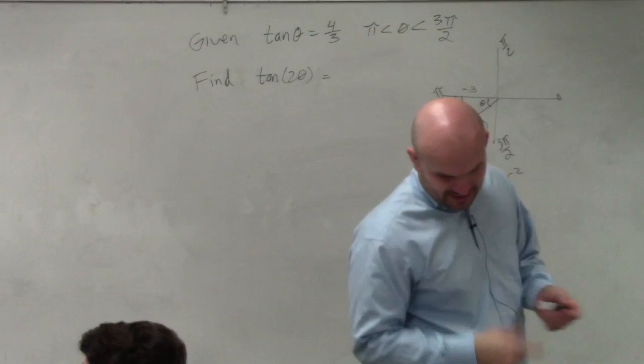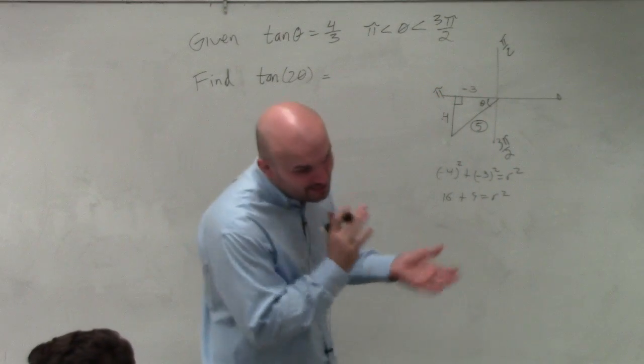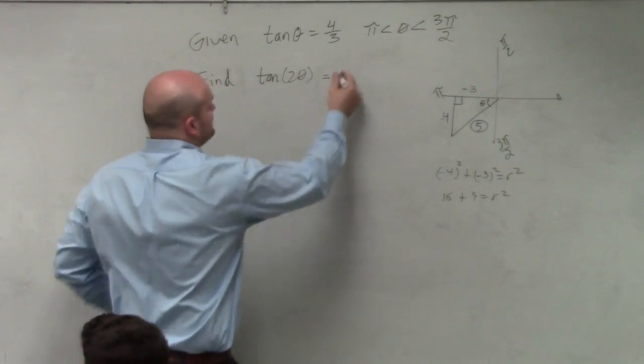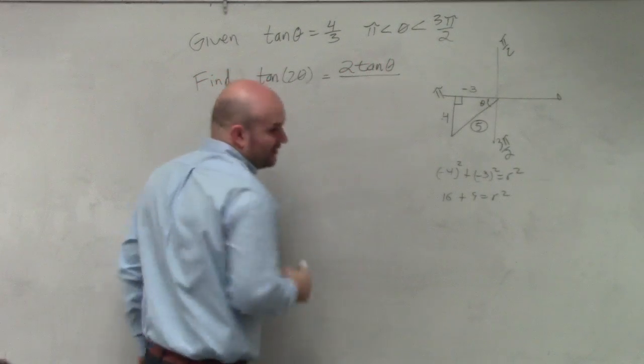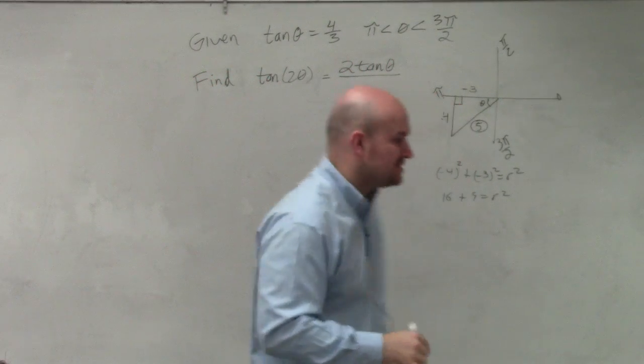If you look at this, you see there's the tangent of your double angle. You can see we have this formula: 2 tangent of theta all over 1 minus tangent squared theta.